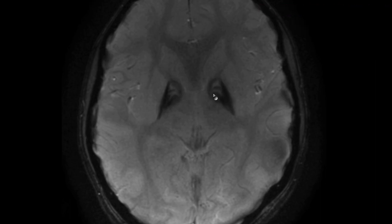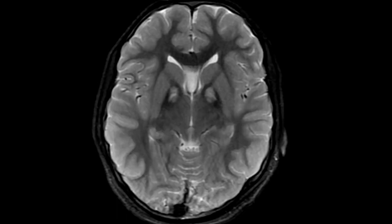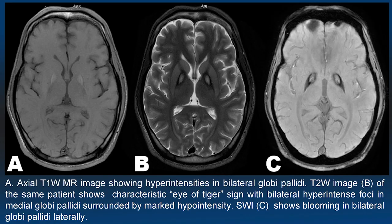Some part of the globus pallidus is not showing blooming. Metal deposition can sometimes be hyperintense on T1, and you can appreciate that finding here. This is a case of Hallwarden-Spatz disease, where you can see all these findings. A similar case shows the classical eye of tiger sign and blooming on susceptibility-weighted images.